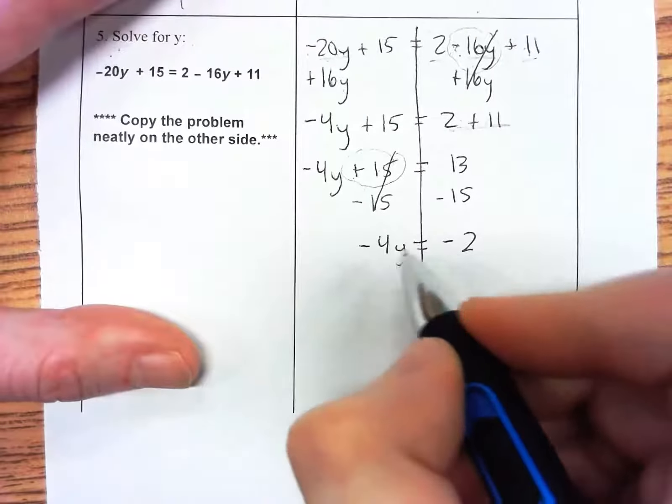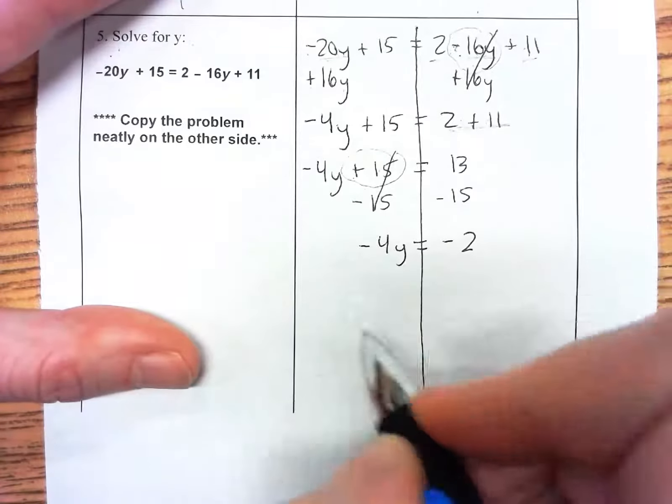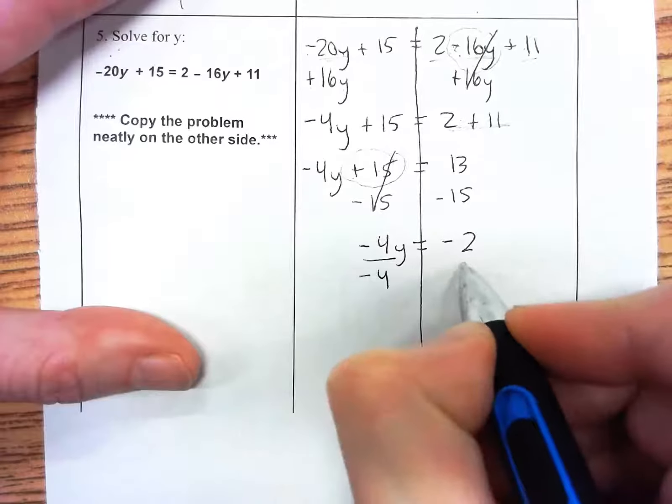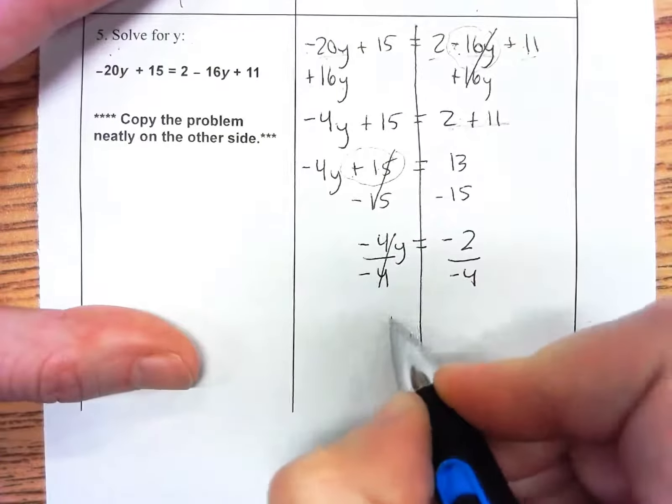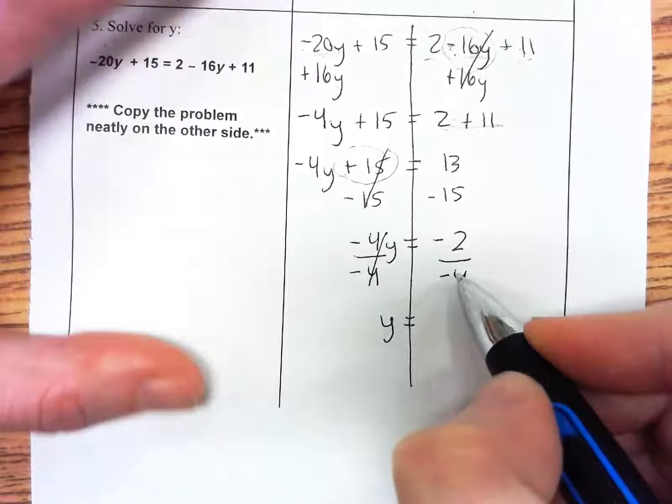Our final step is to get y by itself. This is multiplying by negative 4, so I'm going to divide by negative 4 on both sides. This cancels and I'm left with y equals negative 2 divided by negative 4.